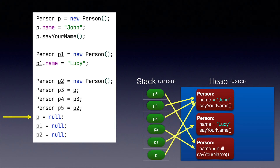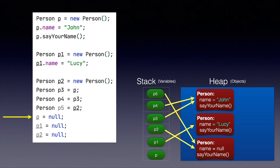In this case, we are doing p equals null, so the link from p to person John will be gone. When the next line is executed, we are assigning null to p1, and the link from p1 to the person whose name is Lucy will be gone.